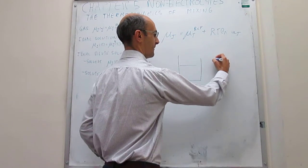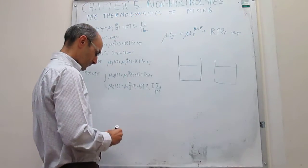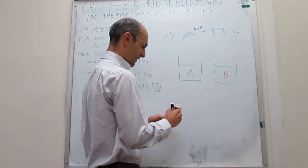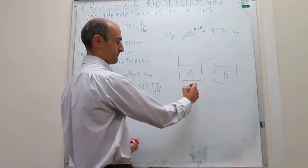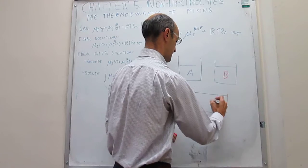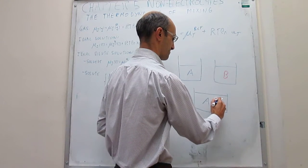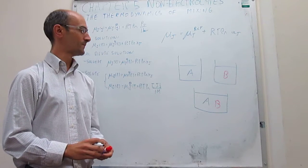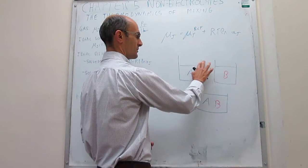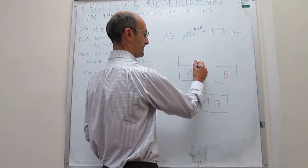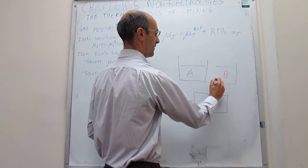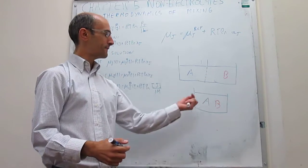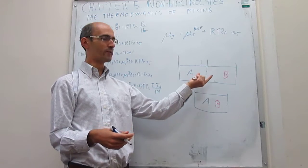We're going to have liquid A and liquid B, and then we're going to mix them to form a solution. Our goal is to calculate whether this mixing will be spontaneous. Another way to see this is to suppose that we have a container in which these two liquids are separated by a wall. Our goal is to remove the wall and see if the mixing of these two liquids will be spontaneous, or whether they prefer to stay separated.